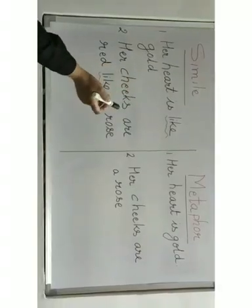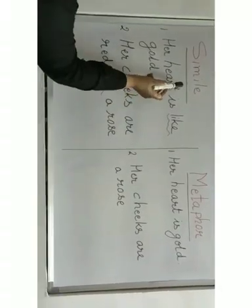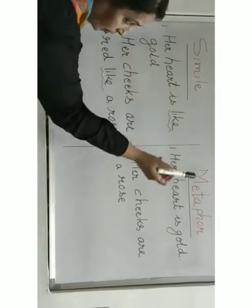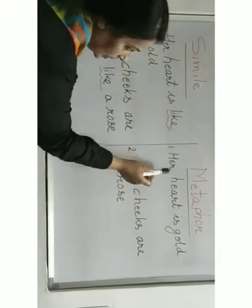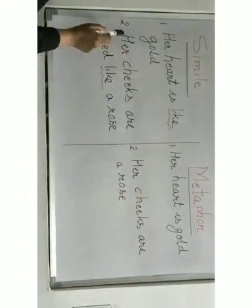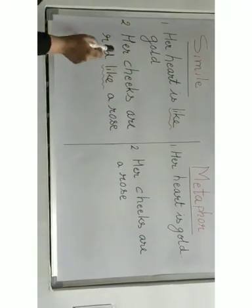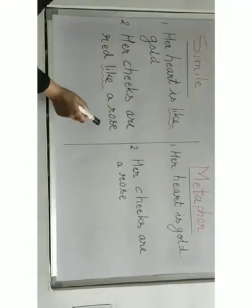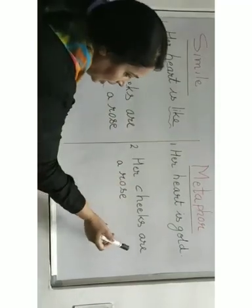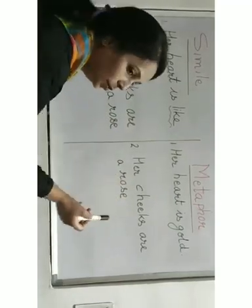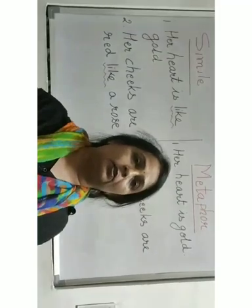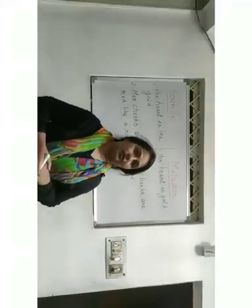Here are a few more examples. Simile: her heart is like gold. Metaphor: her heart is gold. Simile: her cheeks are red like a rose. Metaphor: her cheeks are a rose. This was the basic difference between simile and metaphor. Hope you understood the lecture.